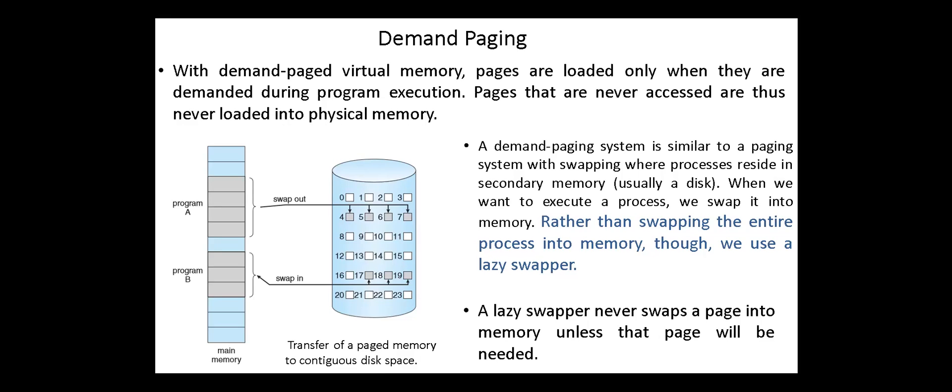A demand paging system is similar to a paging system with swapping where processes reside in secondary memory, usually a disk. When we want to execute a process, we swap it into memory. But rather than swapping the entire process into memory, we use a lazy swapper. A lazy swapper never swaps a page into memory unless that page will be needed.